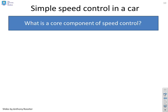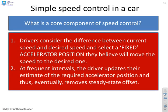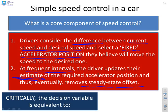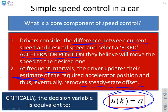Let's look at an example: simple speed control in a car. What do drivers do? They consider the difference between the current speed and the desired speed, and they select a fixed accelerator position they believe will move the speed to the desired one. However, at frequent intervals, the driver updates their estimate of the required accelerator position, and thus eventually removes steady-state offset. The decision variable the driver is using is of this form: they're choosing a fixed future accelerator position — a constant future input — which they believe will give the output they want. This philosophy matches exactly what PFC does.